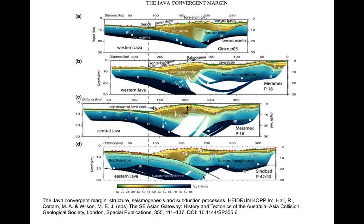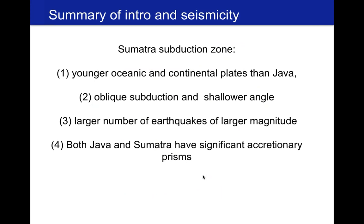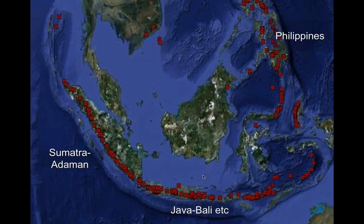There is also work on imaging the accretionary prisms in both Sumatra and Java — there's a significant accretionary prism in both areas. The first-order summary of seismicity: there's a significant change between Sumatra and Java in the age of both oceanic and continental plates. There's oblique subduction and a shallower angle in Sumatra, many more large-magnitude earthquakes in Sumatra, but both have a significant accretionary prism that may play a role in seismicity.